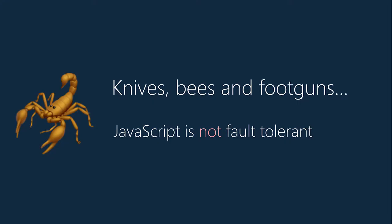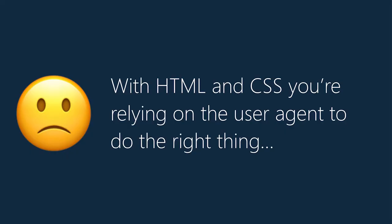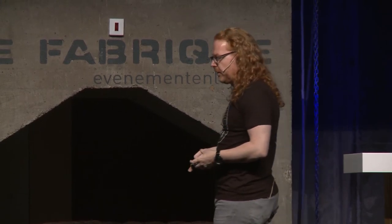JavaScript, on the other hand, is all about knives, bees, and foot-guns — because it's not fault tolerant. As soon as you make one JavaScript mistake, it says: I don't play with you anymore. It shows an error and stops doing anything — and it stops every other JavaScript you tried to include as well if they're dependent on each other. With HTML and CSS you're relying on the user agent to do the right thing: to know what input type=telephone is, to automatically stop a CSS animation when it can't run it. There's a lot of trust placed in the browser.